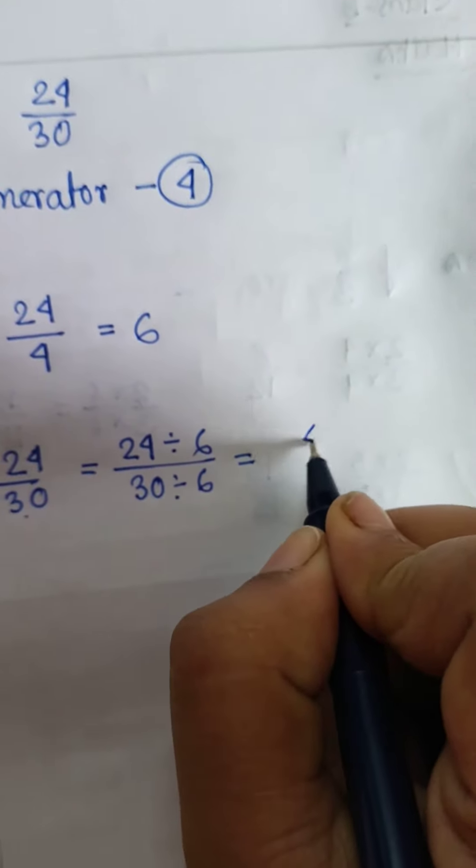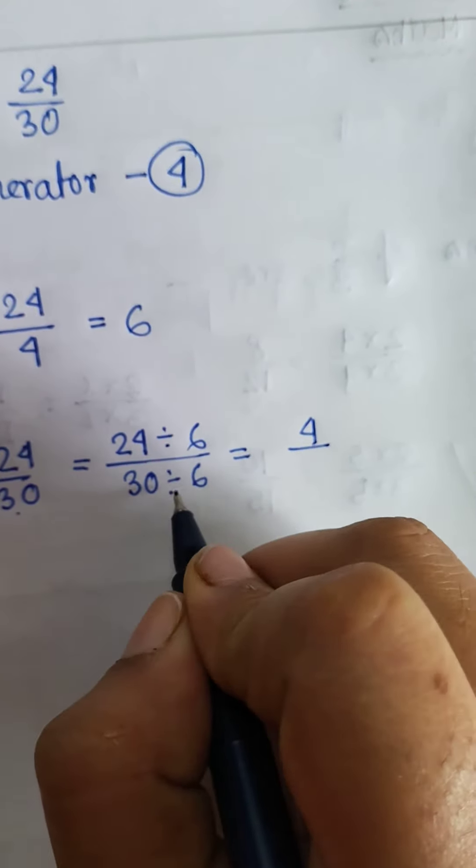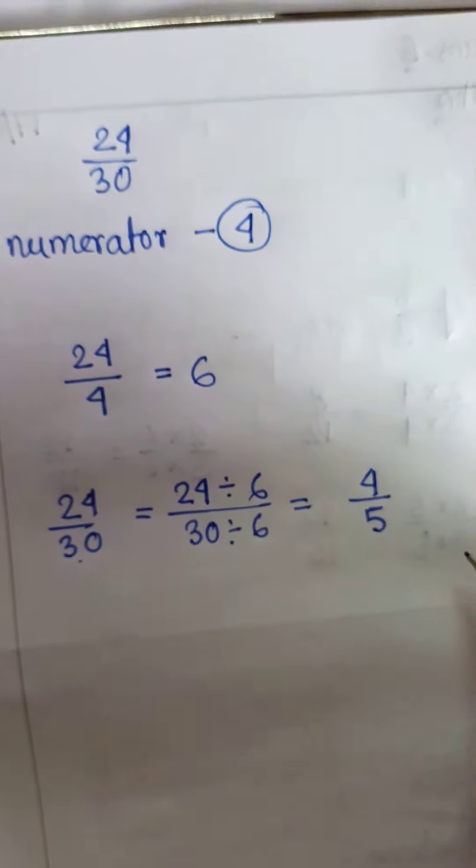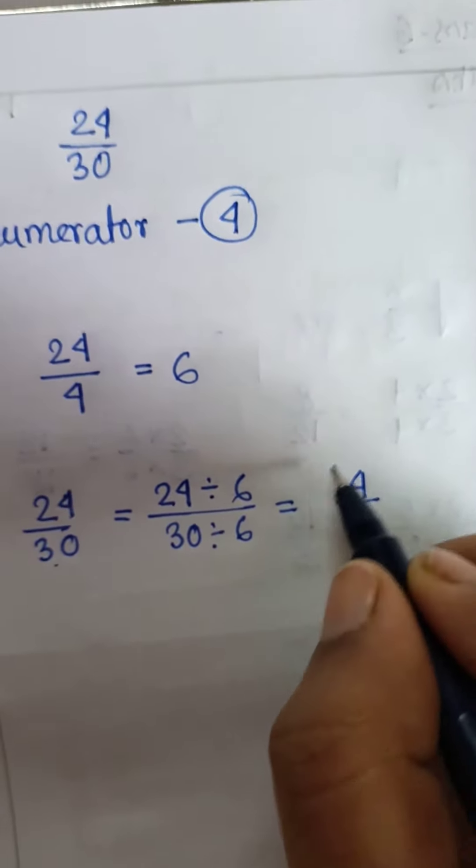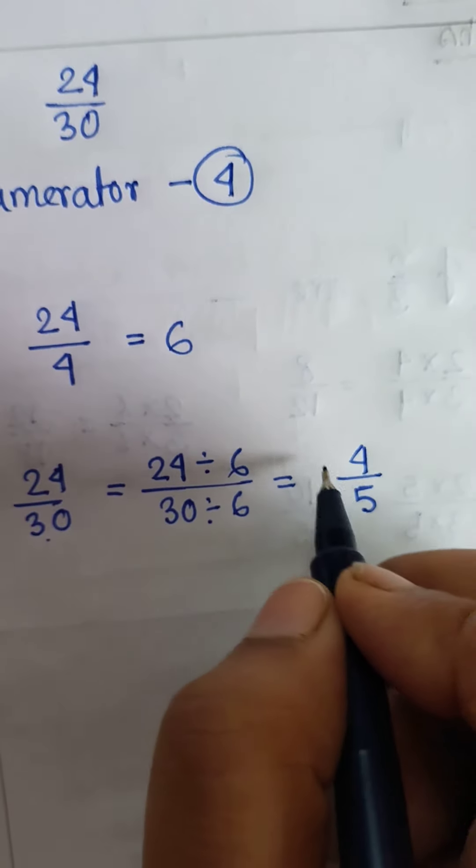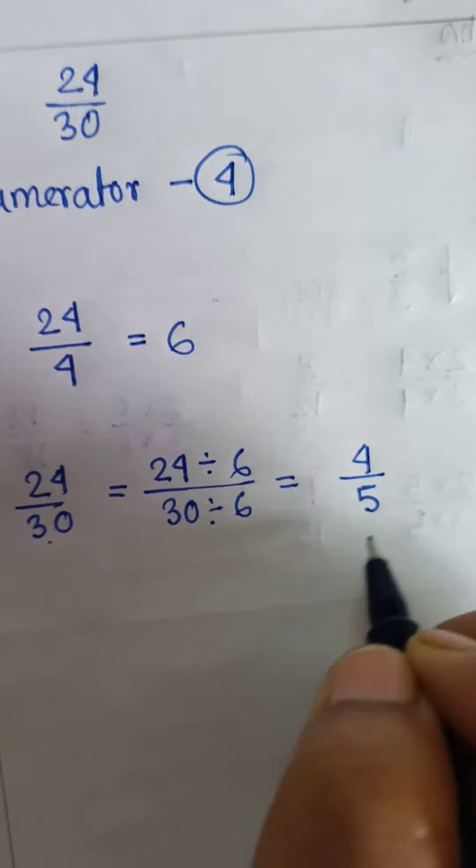Then we will get 4 by 5. 5 times 6 is 30, so 4 by 5. This is the equivalent fraction of 24 by 30 having numerator 4 and denominator 5.